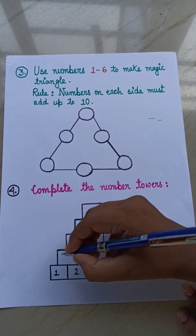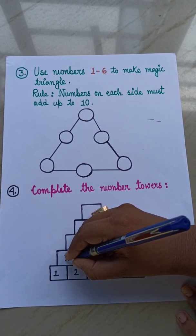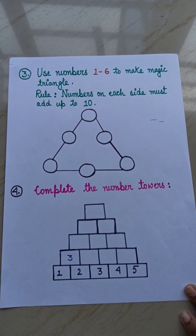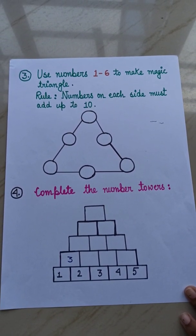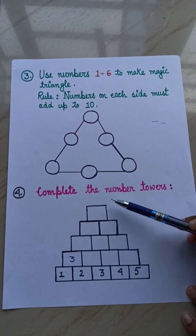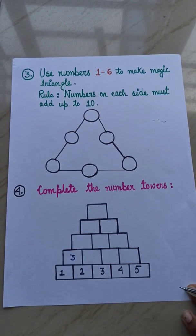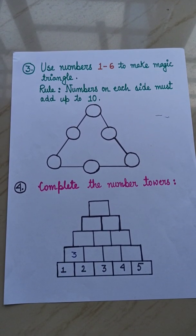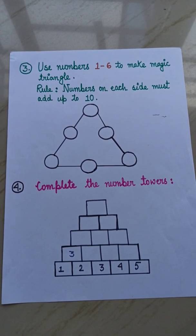Here just I am giving one more thing. Here it will be 3. So just you now understand what will be the next. Now you will complete the number tower. Just pause the video and take the screenshot of sum number 3 and 4.